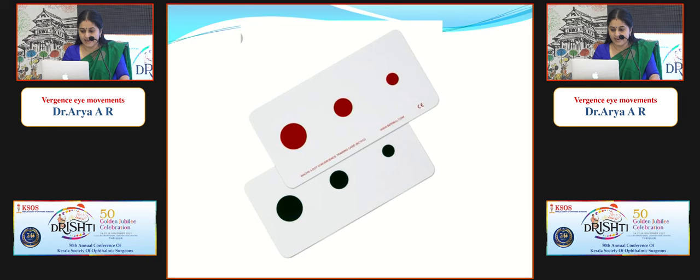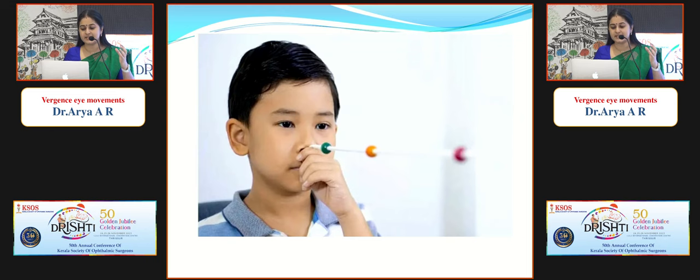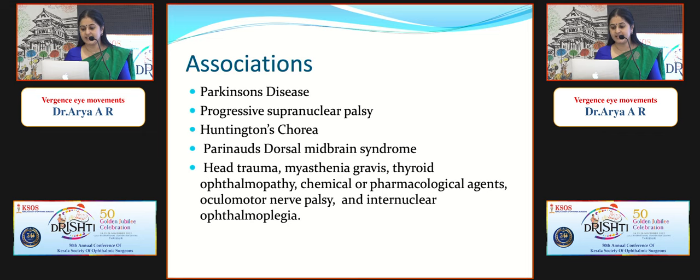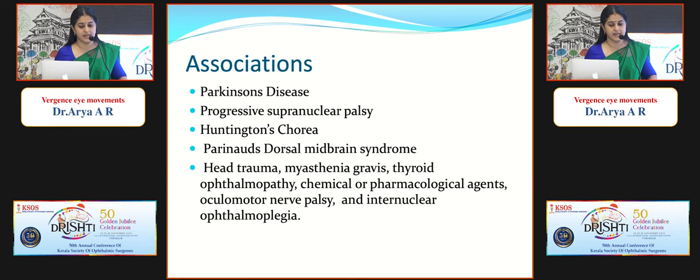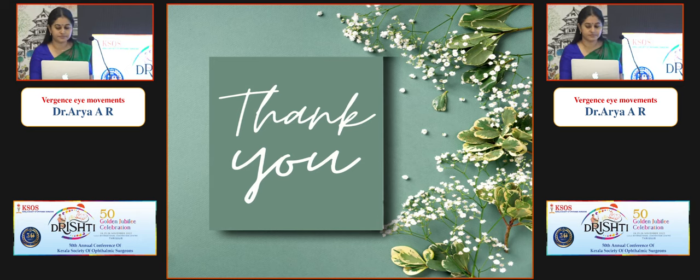Other tools for convergence insufficiency include the stereogram card, the diploscope, and string exercises available online. Neurological associations of convergence insufficiency include Parkinson's disease and progressive supranuclear palsy.